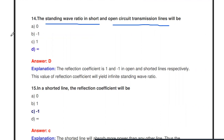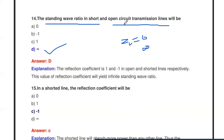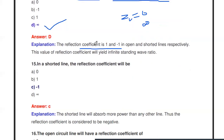The standing wave ratio in short-circuited and open-circuited transmission lines is — infinity. Under open or short circuited conditions the reflection coefficient is +1 or −1 respectively (|k| = 1), so substituting into the SWR formula gives infinity. The maximum SWR is reached when the transmission line is either open circuited or short circuited.